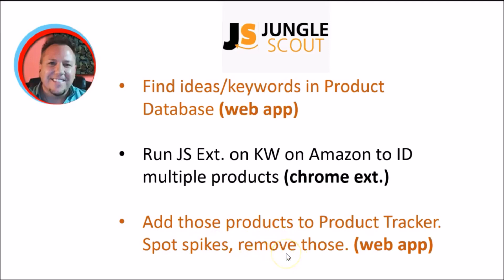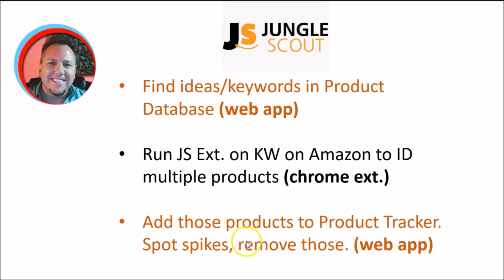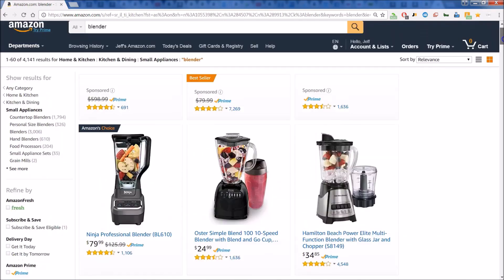So once more, at the top: find ideas and keywords in the product database within the web app. Run the Jungle Scout extension in your Chrome browser on keywords while on the Amazon site to identify multiple products. Once you get those products, bring them into the product tracker in the web app — it will help you spot anomalies and remove those as needed, so that you have a solid set of products from which to choose. Let's have a quick review of the Chrome extension for Jungle Scout.